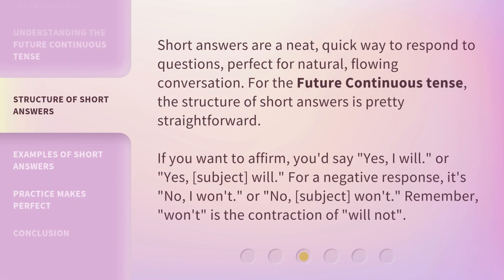Short answers are a neat, quick way to respond to questions, perfect for natural, flowing conversation. For the future continuous tense, the structure of short answers is pretty straightforward. If you want to affirm, you'd say 'Yes, I will,' or 'Yes, [subject] will.' For a negative response, it's 'No, I won't,' or 'No, [subject] won't.' Remember, 'won't' is the contraction of 'will not.'